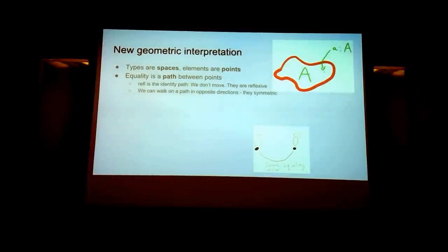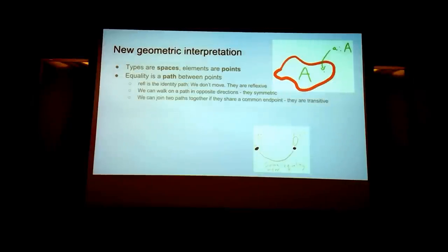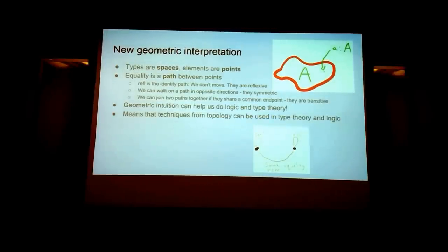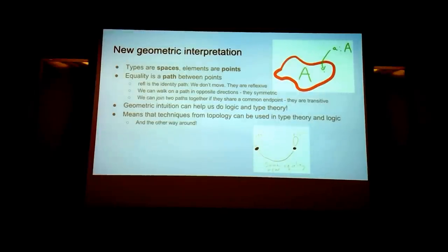We can walk on a path in both directions — it's symmetric — and we can join two paths together if they share a common endpoint, which is transitivity. Geometric intuition can help us do logic in type theory, which means techniques from topology can be used in type theory and vice versa.